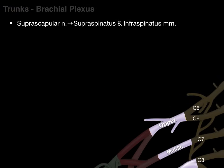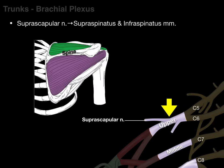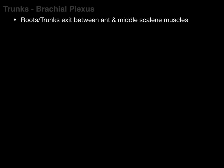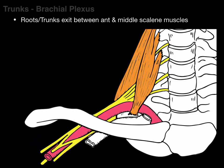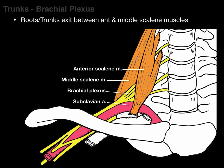One branch to focus on is the suprascapular nerve that innervates our supra- and infraspinatus muscles. There is the upper trunk — C5 and C6 going into the upper trunk — making our suprascapular nerve, which then innervates our supra- and infraspinatus muscles, named according to their association with the spine of the scapula. The roots and trunks together exit between our anterior and middle scalene muscles, just above the clavicle, alongside the subclavian artery.